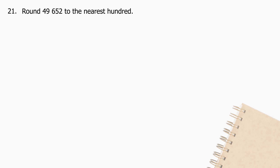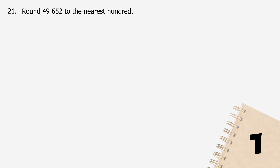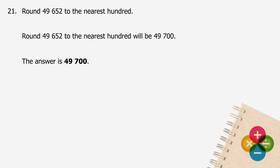Question 21: Round 49,652 to the nearest hundred. Rounding 49,652 to the nearest hundred gives 49,700. The answer is 49,700.